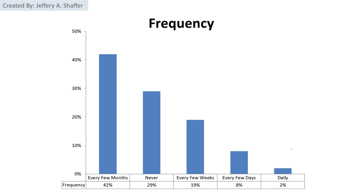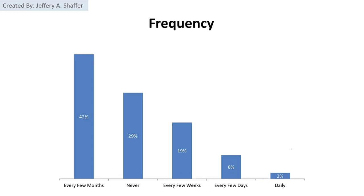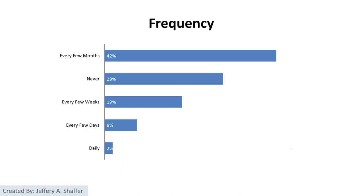We can clean this up a bit and also add a data table in Excel. We can also remove the y-axis and add a data table so that we can label the bars directly. We can also rotate the chart, which can be very useful when there are longer labels so we can avoid rotating the text. This makes it really easy to read and makes comparisons easy.